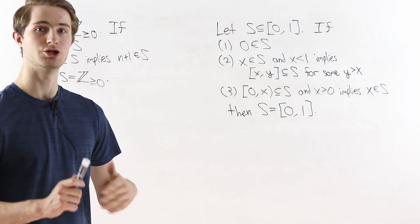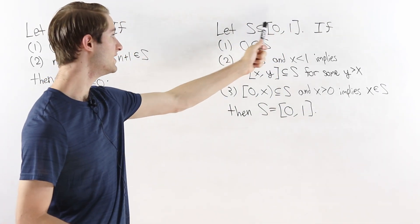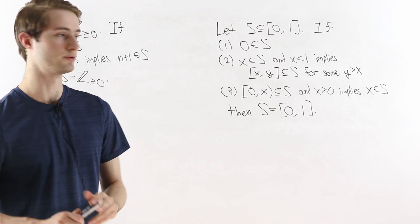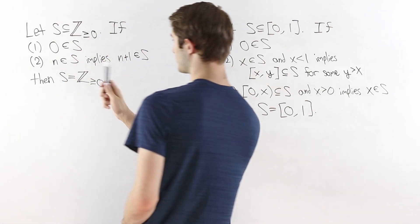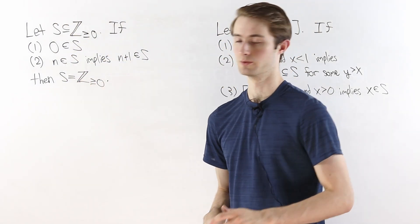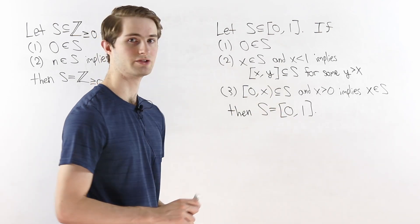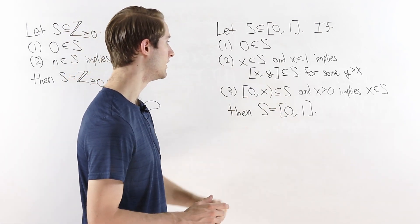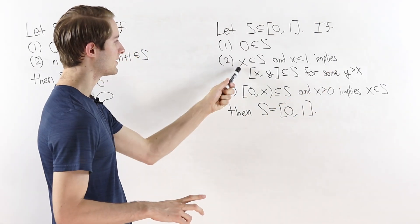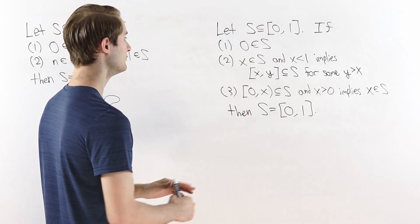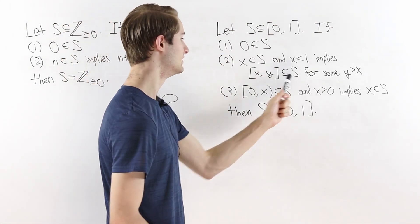These same ideas can be extended to any closed interval from a to b on the real numbers, and even to intervals that go off to infinity. So let's take a look at the formulation of real induction. Instead of considering a subset of the non-negative integers, we're considering a subset S of the closed interval from zero to one on the real numbers, and this time we have three conditions. The first condition is that zero is in the set, just like before. The second condition is that if we have some element of the set that's less than one, then we must have a closed interval [x, y] that's a subset of S for some y greater than x.